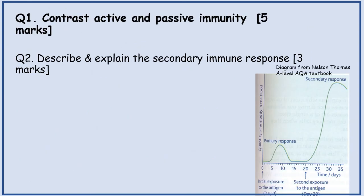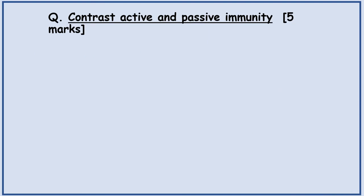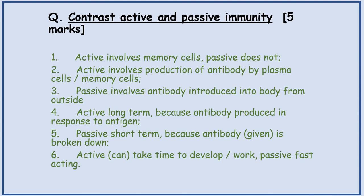Some example questions now. Question one: contrast active and passive immunity. Active involves memory cells; passive does not. Active involves production of antibody by plasma cells or memory cells; passive involves antibody introduced into the body from outside. Active is long-term because antibody is produced in response to the antigen; passive is short-term because the antibody is broken down. Active can take time to develop, whereas passive is fast-acting.